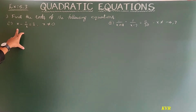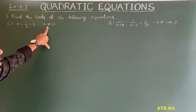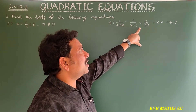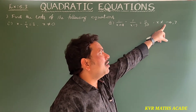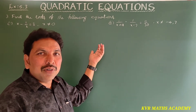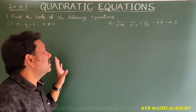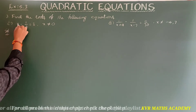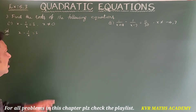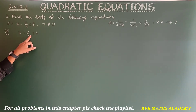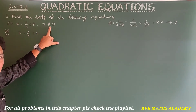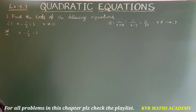Third question: find the roots of the following equations. First one: x minus 1/x is equal to 3, where x is not equal to 0. Second one: 1/(x+4) minus 1/(x-7) is equal to 11/30, where x is not equal to minus 4 and 7. If x equals 0, the value will be undefined, that's why the condition x is not equal to 0.